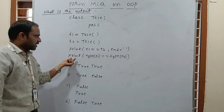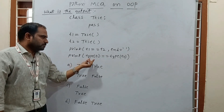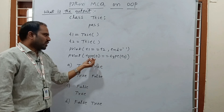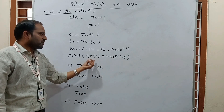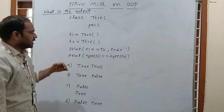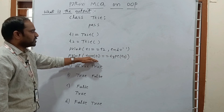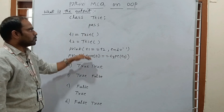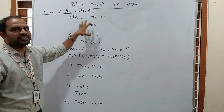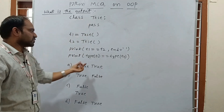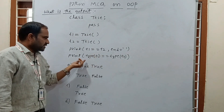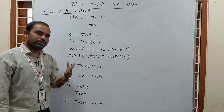Consider the second print statement: type(T1) == type(T2). The type() function returns the type of the object. Since both objects are created under the same class 'test', this comparison returns true.